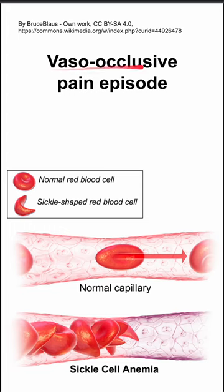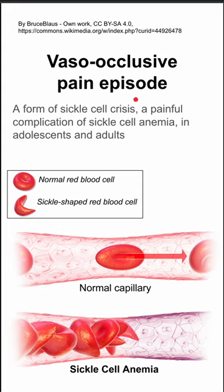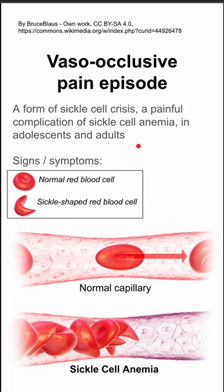Here are some notes on the vaso-occlusive pain episode. This is a form of sickle cell crisis, which is a painful complication of sickle cell anemia, most commonly presenting in adolescents and adults.